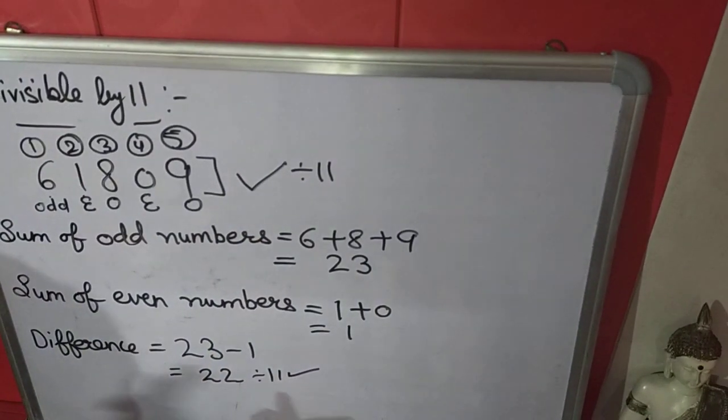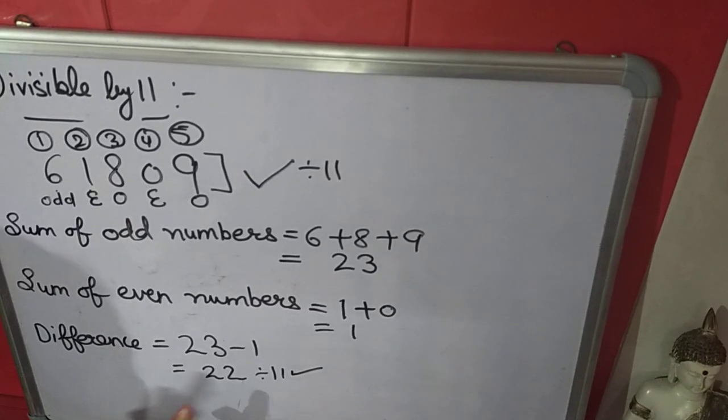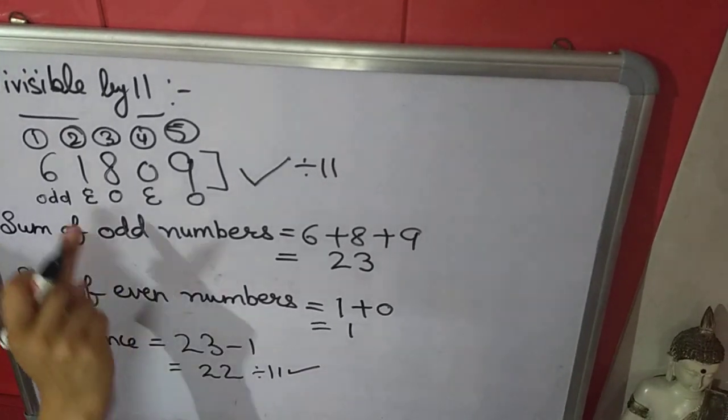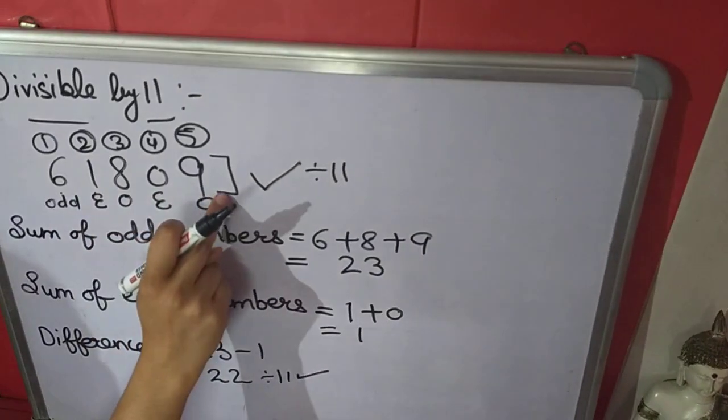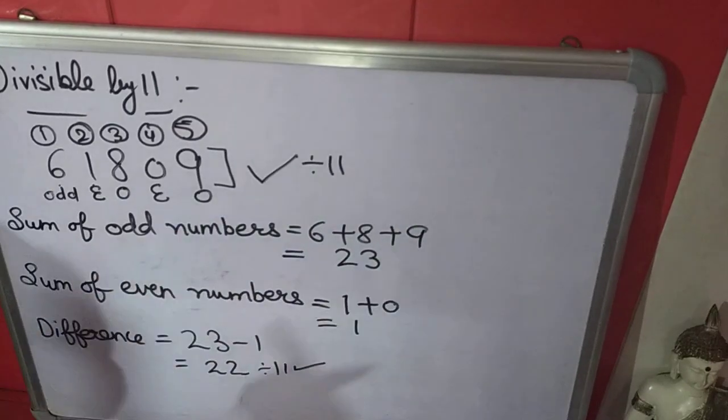If instead of 22 the difference is 0, then also the number is divisible by 11.